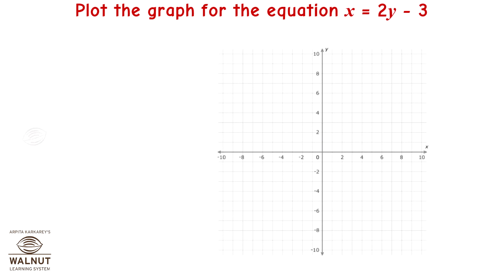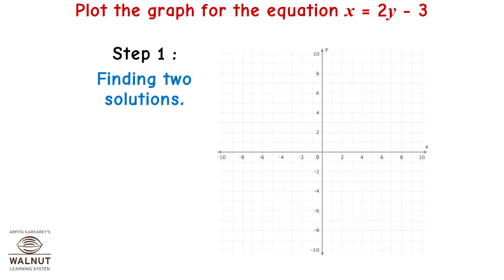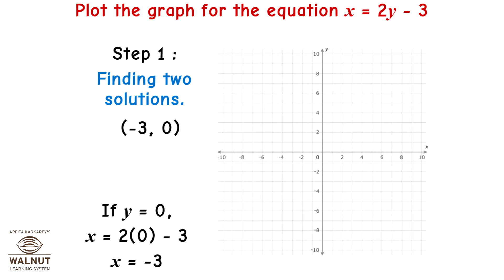Plot the graph for the equation x = 2y - 3. Step 1: Finding two solutions. If y = 0, then x = 2(0) - 3 = -3, giving coordinates (-3, 0). If y = 2, then x = 2(2) - 3 = 1, giving coordinates (1, 2).